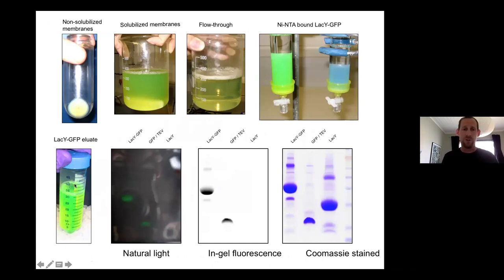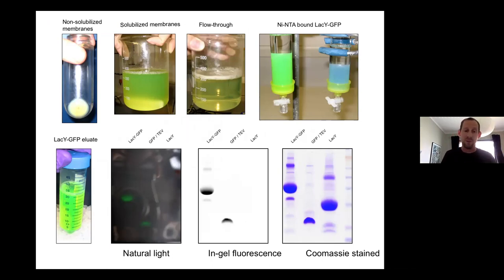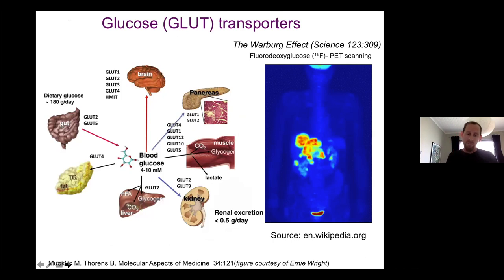This is an example of what this means - a GLUT1 purification. You get solubilized membranes from a well-expressed protein, then the flow-through from a nickel column, your elution, and then the GFP fluorescence. You might even be able to pick out the fluorescence with a finger and camera under natural light - you can see the concentrated GFP. With blue light you can go to lower detection limits, and this is our recovered protein which is fine for crystallization.